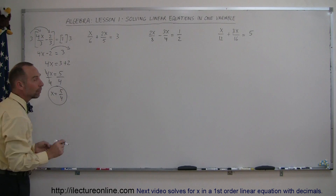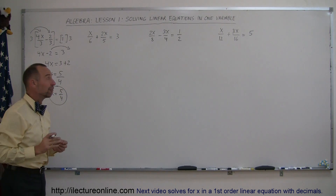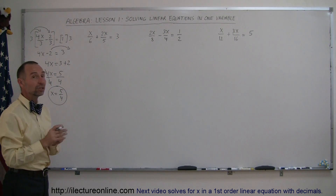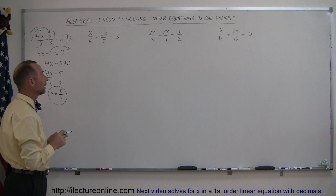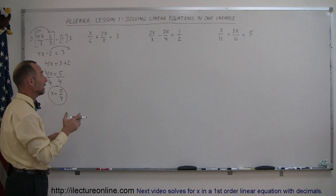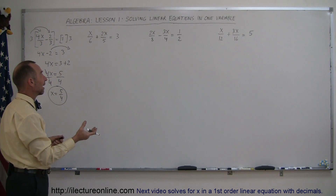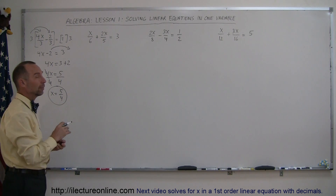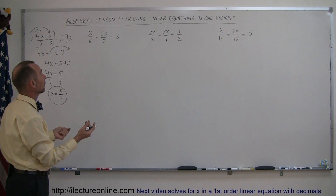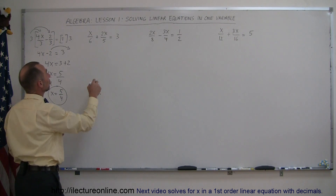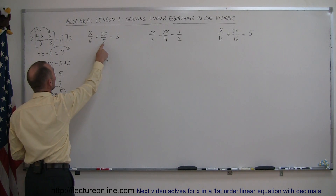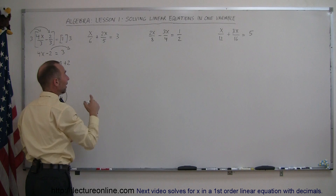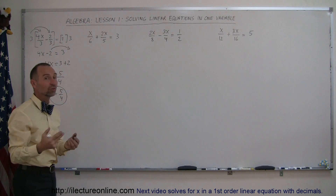The second example: you have fractions again, but this time the denominators are not the same. You need to find what we call the lowest common denominator. In this case, the lowest common denominator is simply going to be the product of those two denominators, 5 times 6, which is 30.